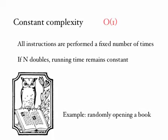Constant complexity, order one. So in an algorithm with constant complexity, all instructions are performed a fixed number of times. For instance, if N doubles, that's the number of input values doubles, then the running time doesn't change,